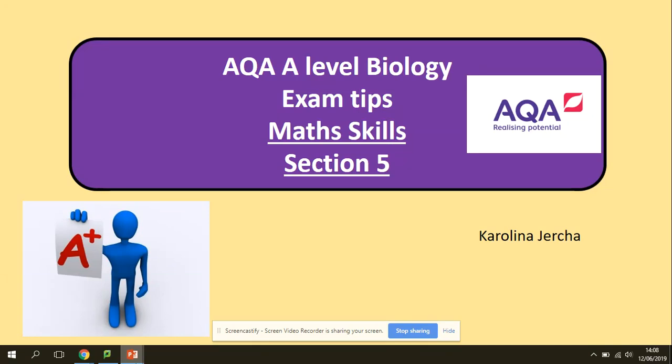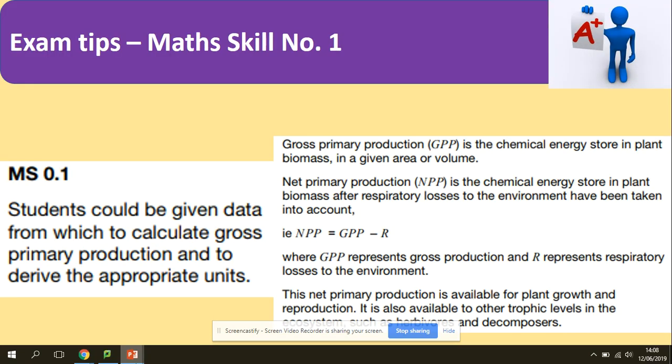Hi guys, welcome to MAPS case section 5. One of the skills that you need to be aware of is the equation for gross primary productivity. The equation contains the net primary production and the respiratory losses. We're going to provide the equation NPP equals GPP minus R. So N stands for net, G stands for gross, and R stands for respiration.